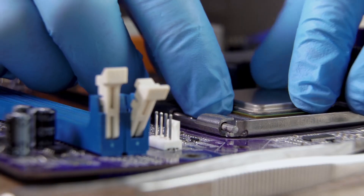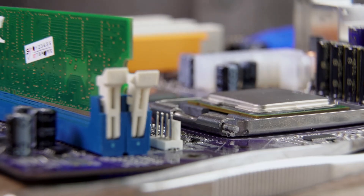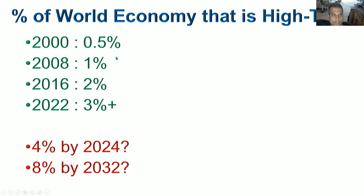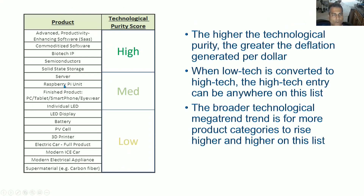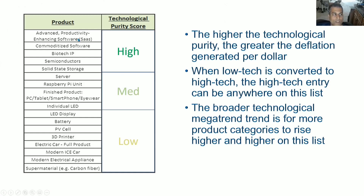That is the definition of high-tech versus low-tech, and there are obviously gradients within that. More and more of the economy is becoming high-tech. What portion of the economy comprises products and services that meet that high-tech threshold? Here's a selection of high-tech, borderline high-tech, and some non-high-tech products, from the highest to the lowest. I categorize them as high technological purity, medium, and low. High means the ones most rapidly advancing and that generate the most deflation. Software is completely dematerialized, and dematerialization is inherent to being high-tech because you don't have to worry about inventory, materials, and shipping, and it can diffuse to the greatest number of people the fastest. Advanced productivity-enhancing software on a software-as-a-service delivery model is pretty much the highest-tech type of thing.